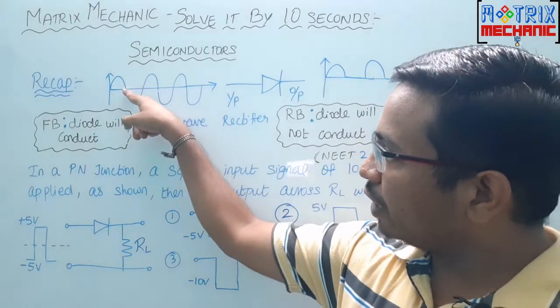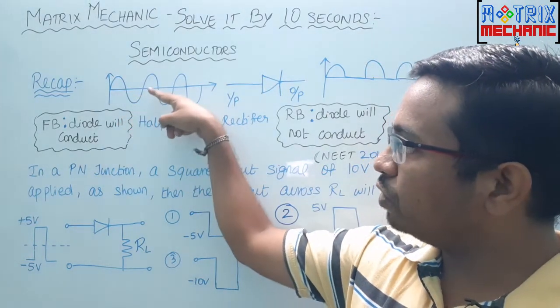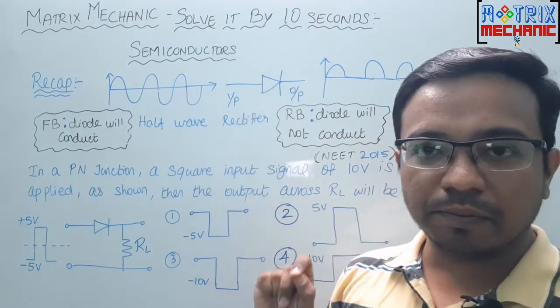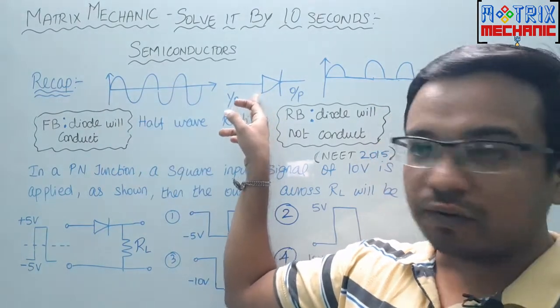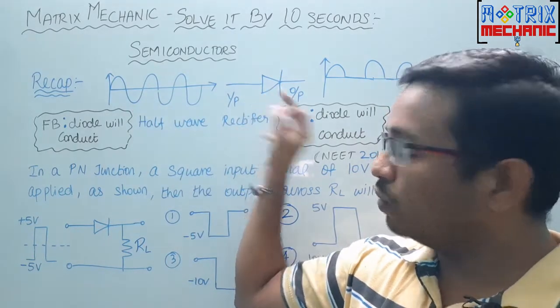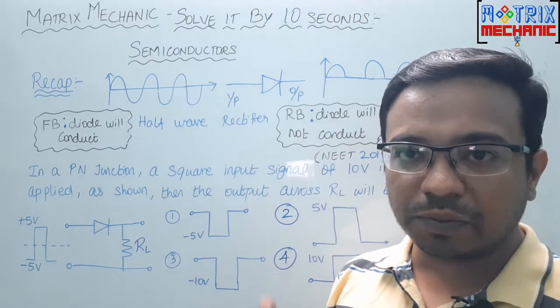Now, the negative AC voltage applied to this P type is called reverse bias. When positive is applied to P type, forward bias. Negative is applied to P type, it is called reverse bias.